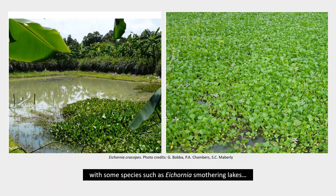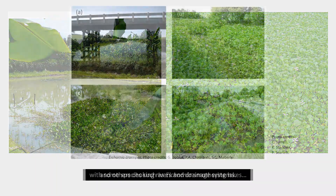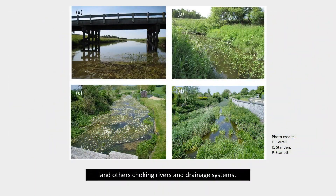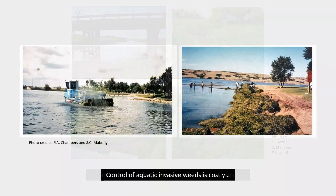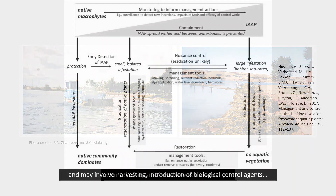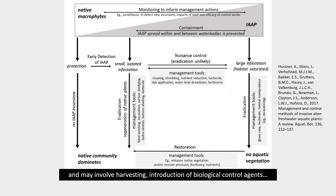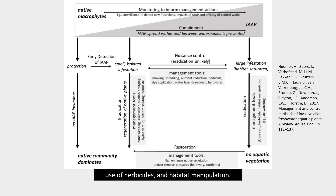Some species are smothering lakes, and others choking rivers and drainage systems. Control of aquatic invasive weeds is costly, and may involve harvesting, introduction of biological control agents, use of herbicides, and habitat manipulation.